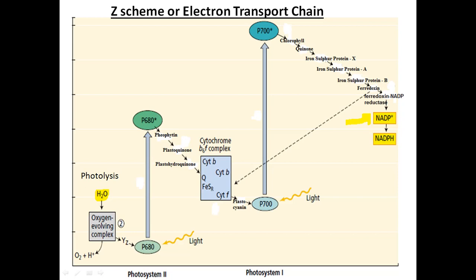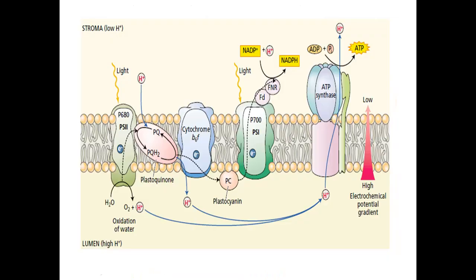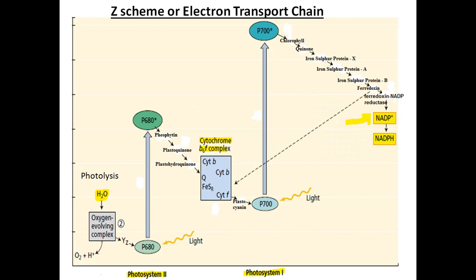The whole Z scheme passes electrons through four major protein complexes. These are: photosystem 2, cytochrome b6f complex, photosystem 1, and ATP synthase. We will come back to ATP synthase later.